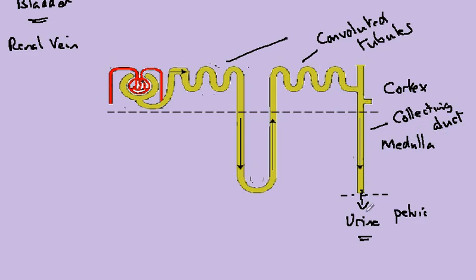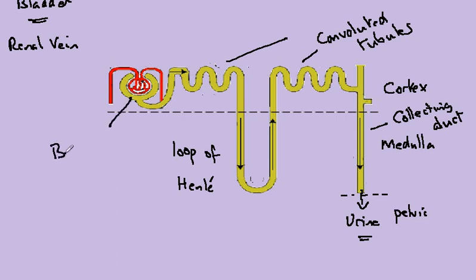Following from the pelvic region, going up the collecting duct, which then twists out in the cortex and dips back down into the medulla — this dip is known as the loop of Henle, which returns back to the cortex and loops again before coming to the dead-end cup-shaped structure known as the Bowman's capsule.